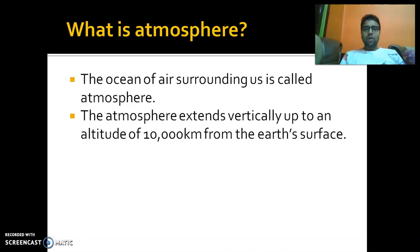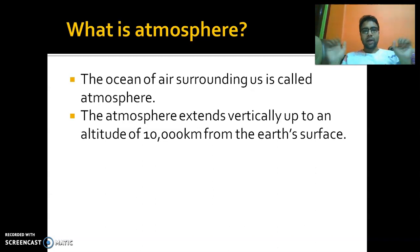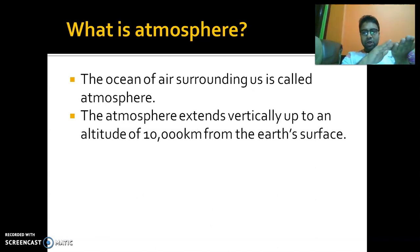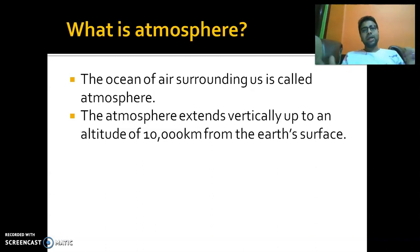First of all, what is atmosphere? By definition, atmosphere is the ocean of air surrounding us. All around us there is a continuous blanket of air, and this continuous blanket of air is known as atmosphere. The atmosphere starts from the surface of the earth and goes to a height of 10,000 kilometers.